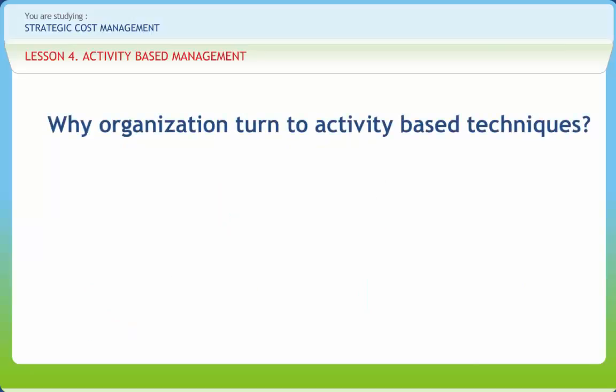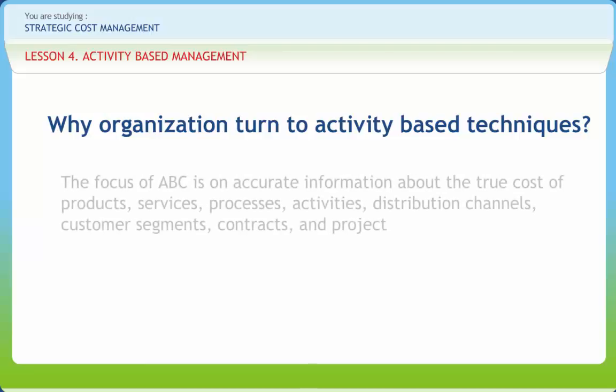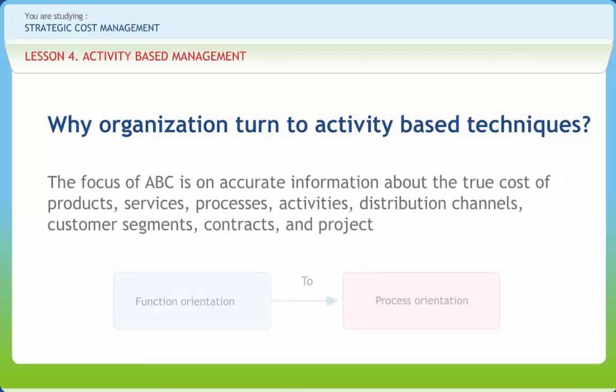Management practices and methods have changed over the last decade and will continue to change. Organizations are moving from managing vertically to managing horizontally — a move from a function orientation to a process orientation. The focus of ABC is on accurate information about the true cost of products, services, processes, activities, distribution channels, customer segments, contracts, and projects.